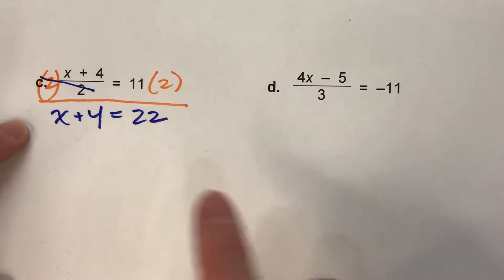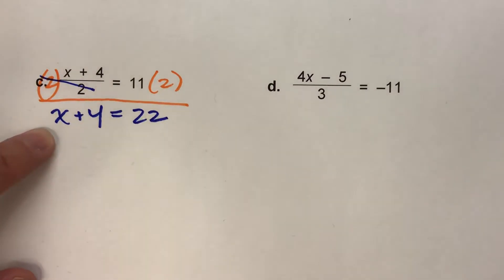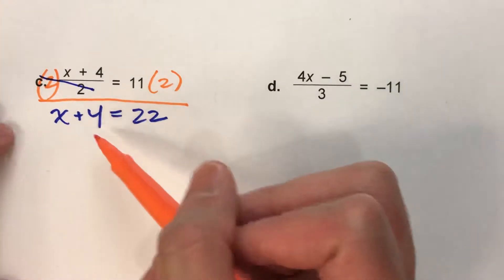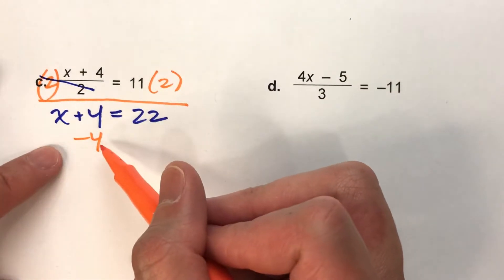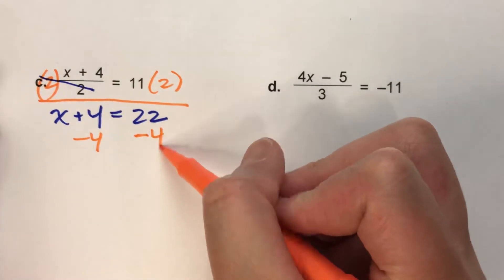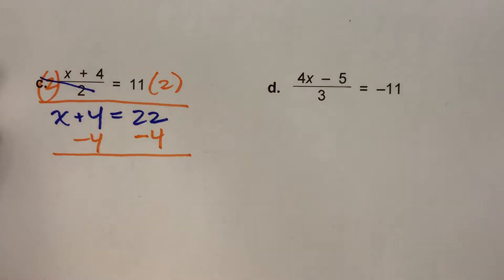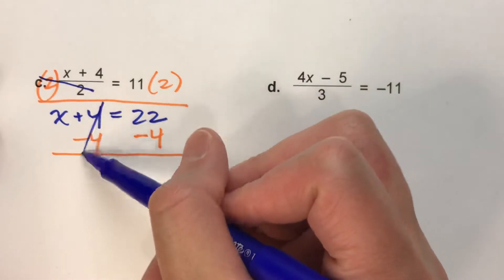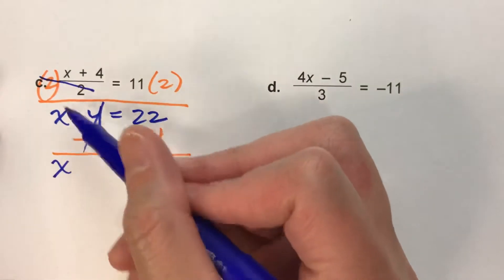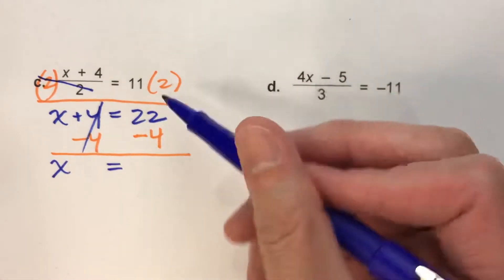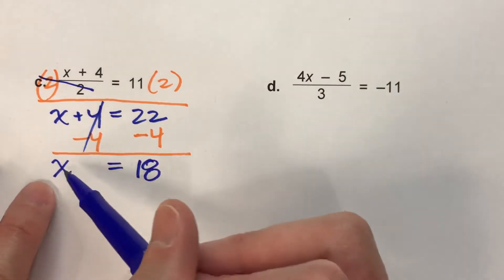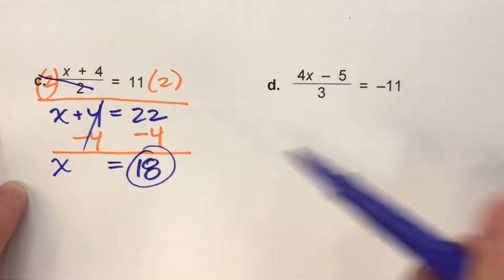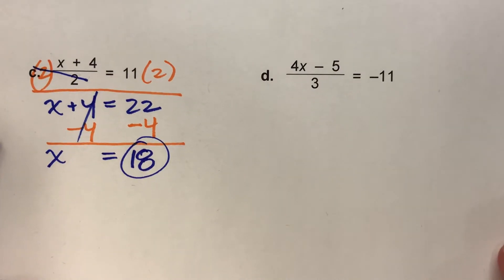Notice we're not done yet — we've got x plus 4 equals 22, so we need to undo that plus 4. To undo adding 4, we're going to subtract 4. What we do to one side of the equal sign, we have to do to the other side. Adding and subtracting 4 undo each other, x drops down, and 22 take away 4 leaves me with 18. We're left with the statement that x equals 18, so that must be the answer.